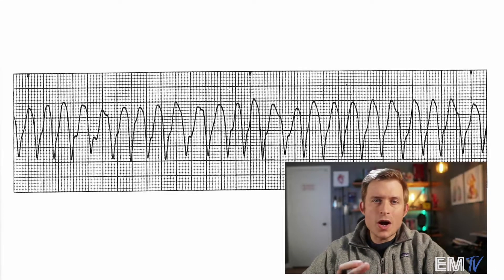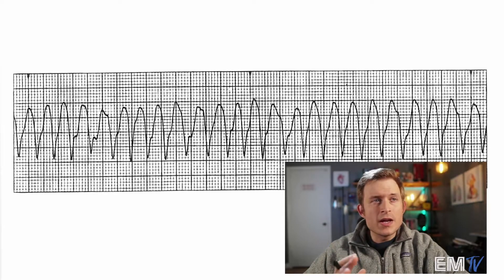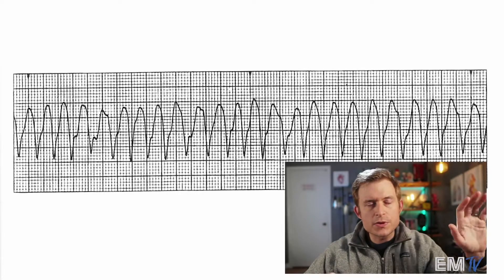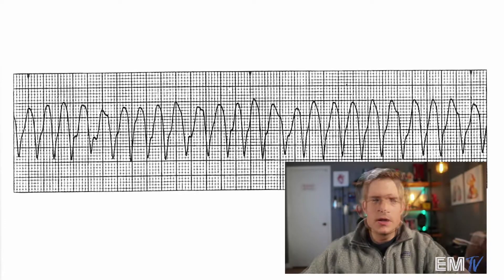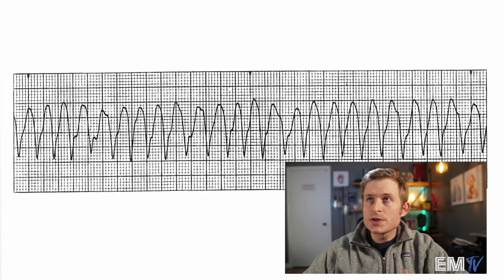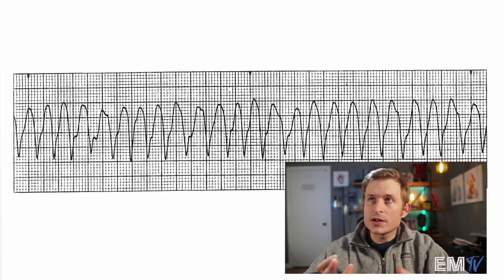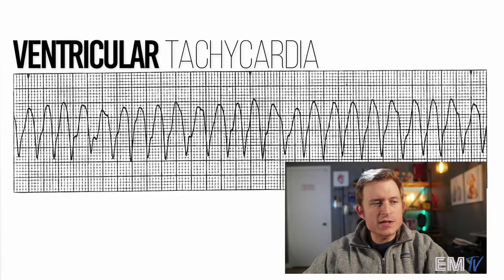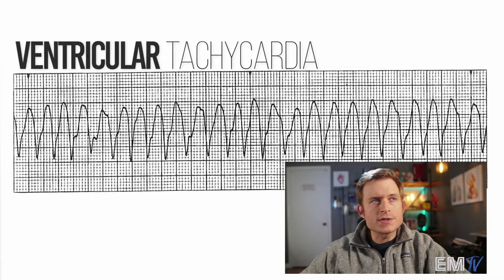Next thing you're going to notice is just how wide these complexes are. I'm not seeing any real P waves here at all, and this super wide QRS complex is going to lead me to believe this is coming from somewhere in the ventricle. No P wave, wide QRS means we've got rid of the sinus rhythm and the AV node. So what's left is your ventricular rhythms. This is well over 100, so my diagnosis here for Static Cardiology would be ventricular tachycardia. You could be more specific and say this is a monomorphic VTAC, but ventricular tachycardia is a-okay.